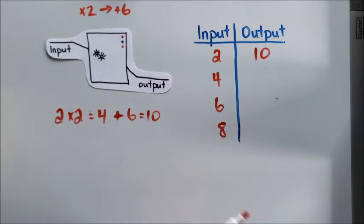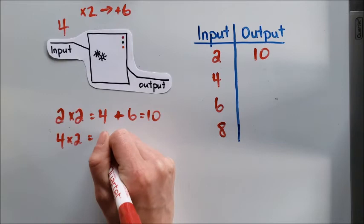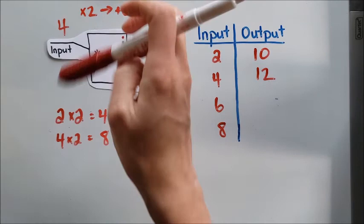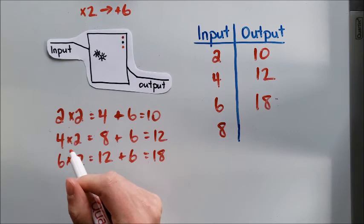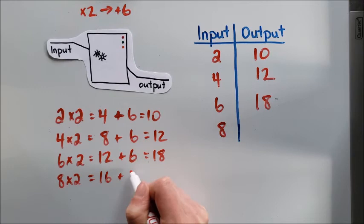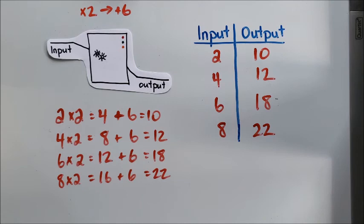So when I then plug my four in, four times two is equal to eight plus six is equal to twelve. I'll plug my six in, six times two is equal to twelve plus six equals eighteen. And the last one I'll plug in is eight times two equals sixteen plus six is equal to twenty-two.